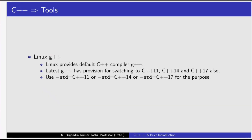Then comes Linux G++. Linux provides a default C++ compiler G++. The latest G++ has provision for switching to C++ 11, C++ 14, and C++ 17 also. Use -std=c++11 or -std=c++14 or -std=c++17 for the purpose.